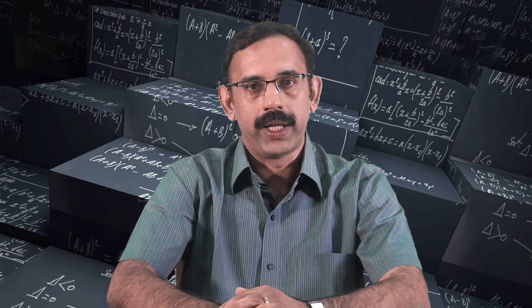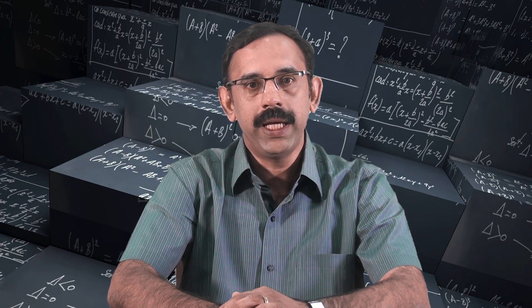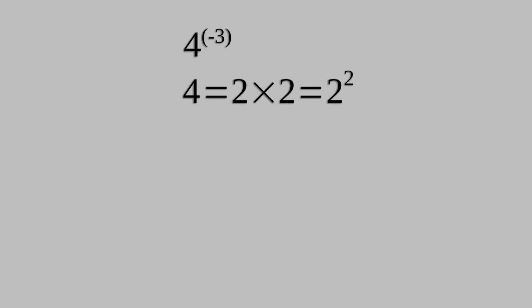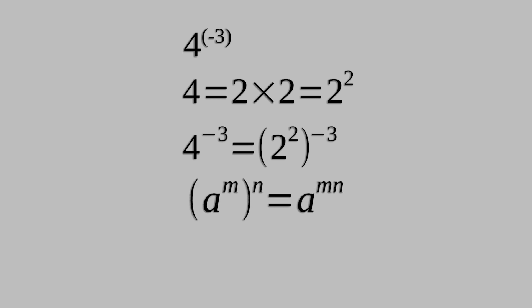Using the laws of exponents, we can change the base of a number expressed in exponential form. Let us try to express 4 raised to minus 3 as a power with base 2. We know that 4 is equal to 2 times 2, which is 2 squared. Hence, 4 raised to minus 3 is 2 squared whole raised to minus 3. Since a raised to m whole raised to n is equal to a raised to mn, 4 raised to minus 3 is equal to 2 raised to minus 6.